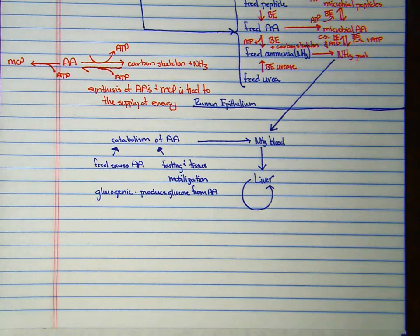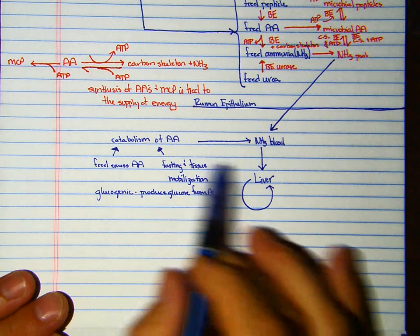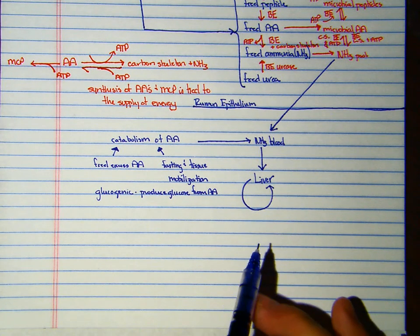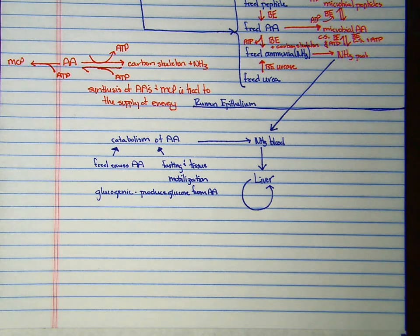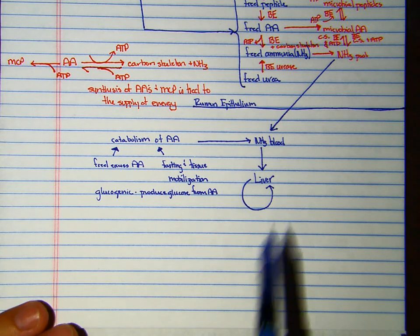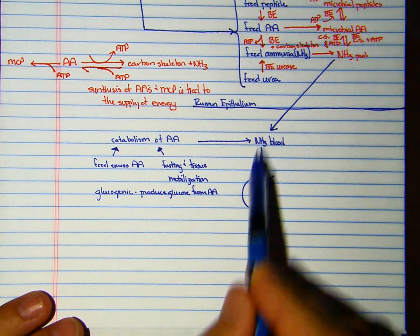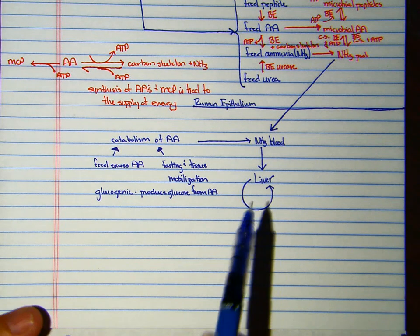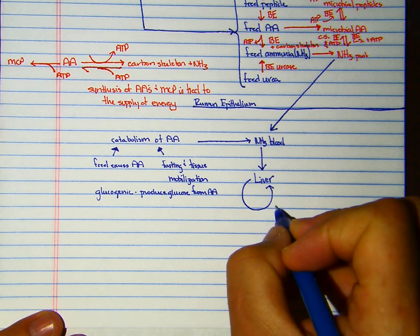Some amino acids are glucogenic, meaning you can actually derive glucose from them to meet your glucose requirements. But what we have to do is get rid of the ammonia because ammonia is toxic to the brain; it'll actually kill you if you have ammonia in your brain. The blood from the gastrointestinal tract drains to the liver, and in the liver we have a process called the urea cycle.